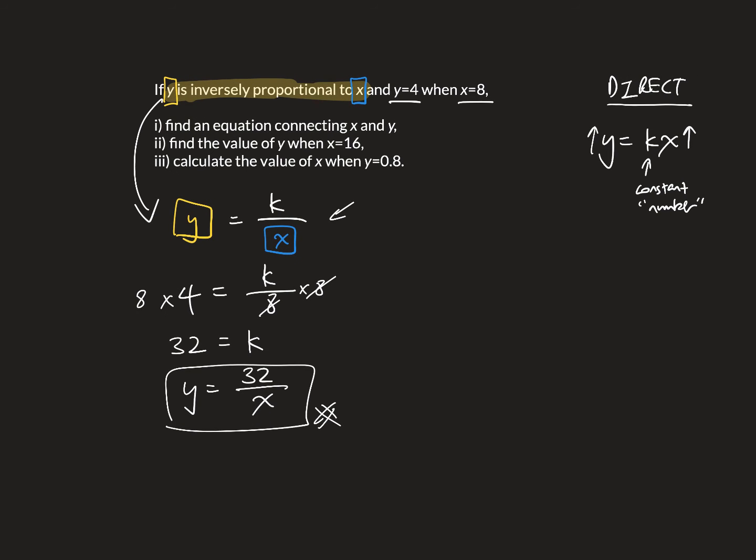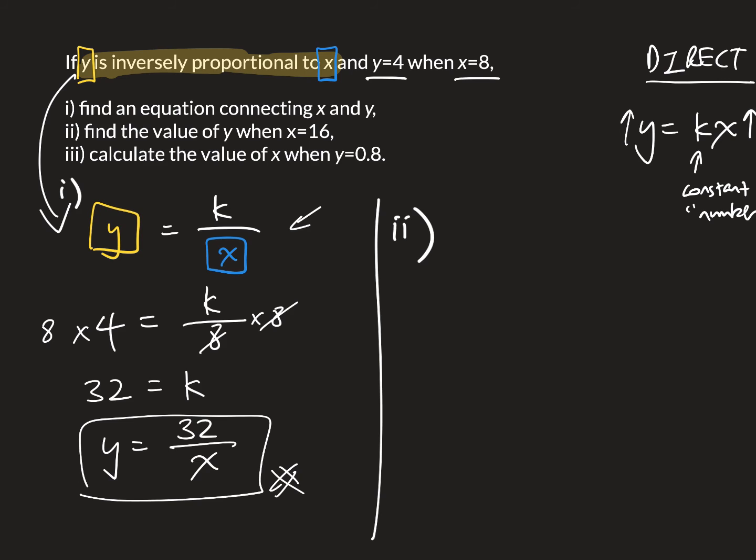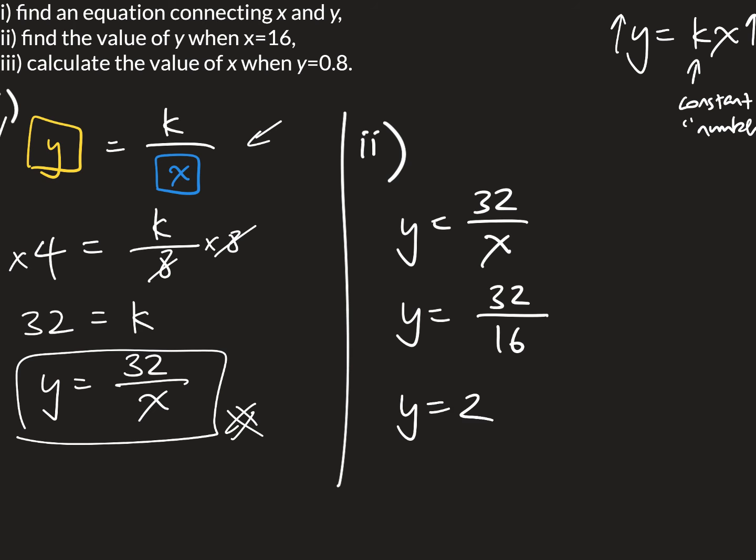And now, part 2. So this was part i. And so for part double i, find the value of y when x equals to 16. And so we start with this formula that we found. And x equals to 16. So 32 divided by 16.